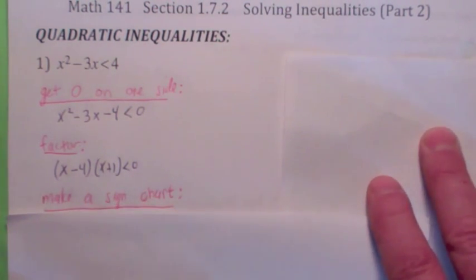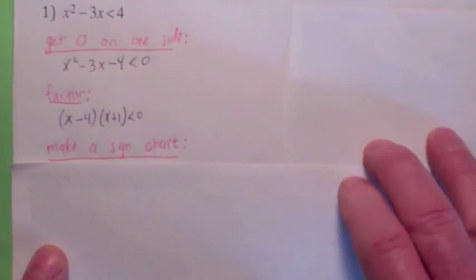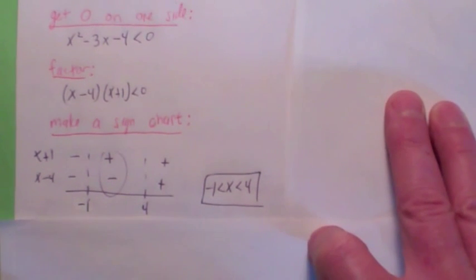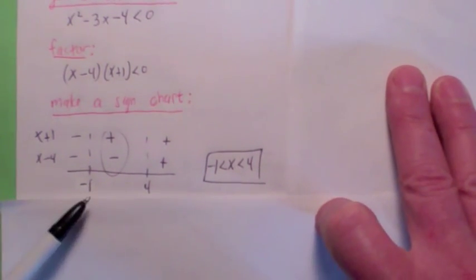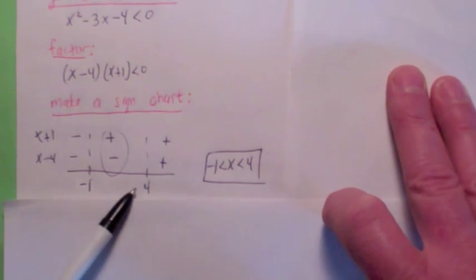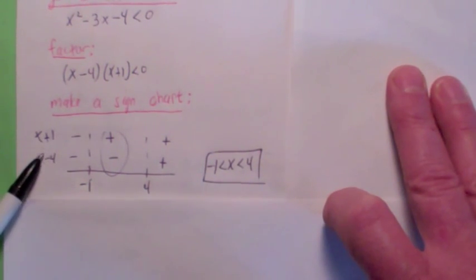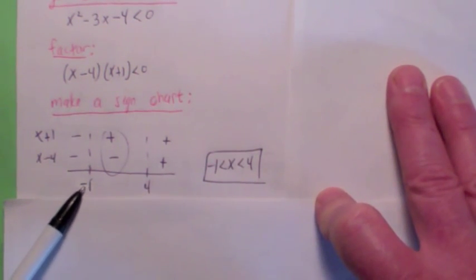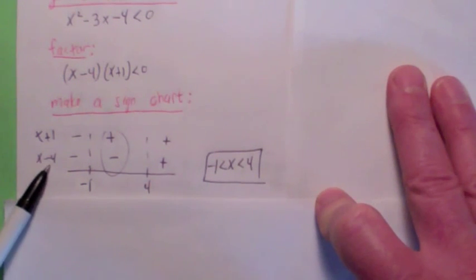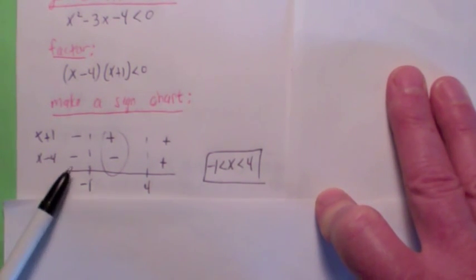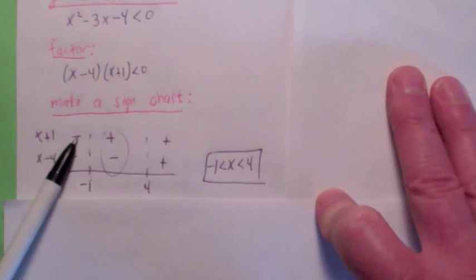The easiest way to do that is to make what's called a sign chart, where we plot the two places where they're zero — at negative 1 and 4 — and then we look at these factors and ask what is the sign of each factor in each region. To the left of negative 1, like how about negative 2? If you plug in negative 2 into the first factor, you get negative 6, which is negative. Plug in negative 2 into the second, you get negative 1, which is also negative.